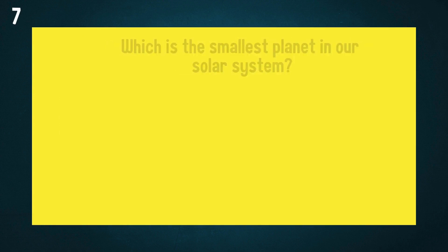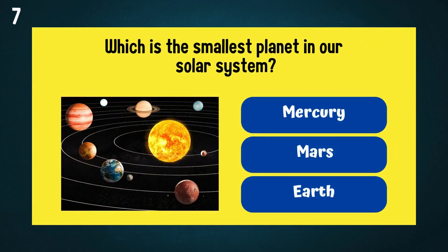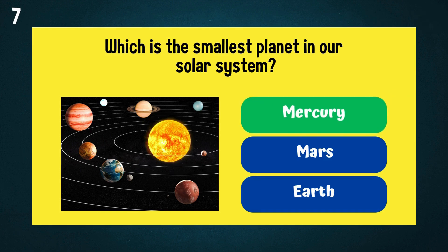Which is the smallest planet in our solar system? The answer is Mercury.